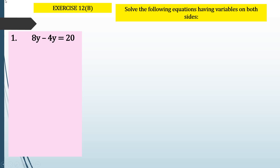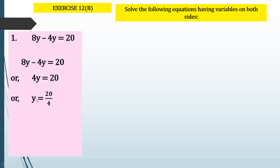How do we solve this? We have learned in our first chapter of algebra, fundamental concept on algebra, that whenever we have like terms, they can add up or subtract. So here we have subtraction, and we will subtract 4y from 8y. Let us start solving: 8y minus 4y equals 4y, which equals 20.